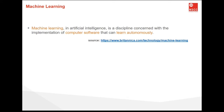In the real world, we are surrounded by humans who can learn everything from their experiences with their learning capabilities, and we have computers or machines which work on our instructions. But can a machine also learn from experiences or past data like a human does? Here comes the role of machine learning. Machine learning in artificial intelligence is a discipline concerned with the implementation of computer software that can learn autonomously. Machine learning is a subset of artificial intelligence mainly concerned with the development of algorithms which allow a computer to learn from data and past experiences on their own.